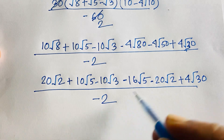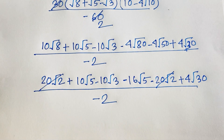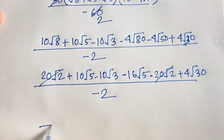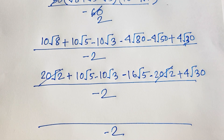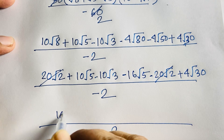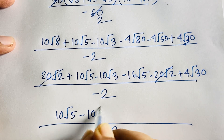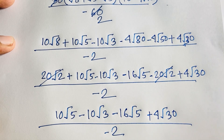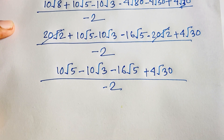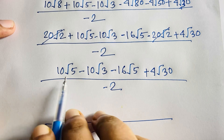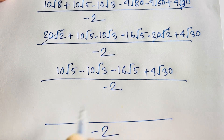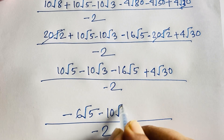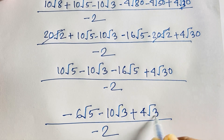The 20√2 terms cancel. Combining like terms: 10√5 minus 16√5 equals −6√5. So the numerator is −6√5 − 10√3 + 4√30, and out front we have minus 2.